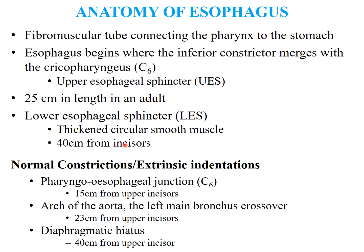The rigid esophageal scope has a length of up to 40 cm. The normal constrictions or extrinsic indentations along the length of the esophagus are at the pharyngoesophageal junction at C6, which is 15 cm from the upper incisors; the crossover of the arch of aorta and left main bronchus, around 23 cm from the upper incisors; and the diaphragmatic hiatus, which is 40 cm from the upper incisors.